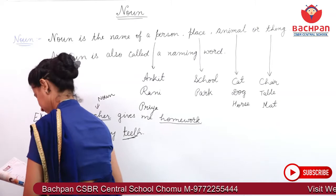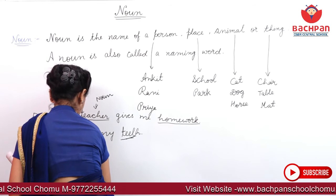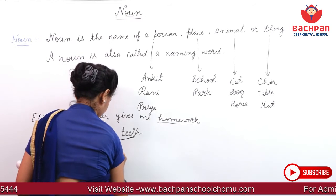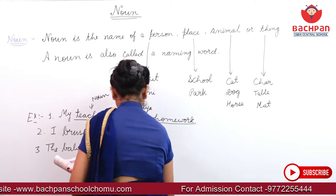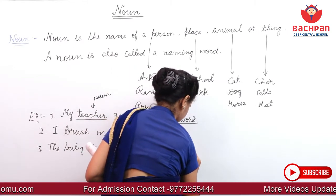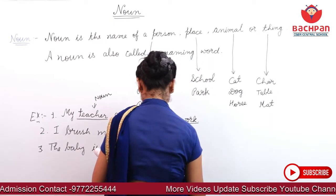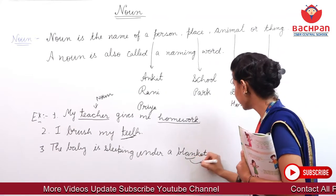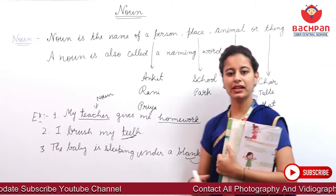Third example. The baby is sleeping under her blanket. Toh ismein noun kya hua? Blanket. Yeh thing hai na? Yeh kya hui? Thing. Toh ye sab aapna kya hai? Noun.